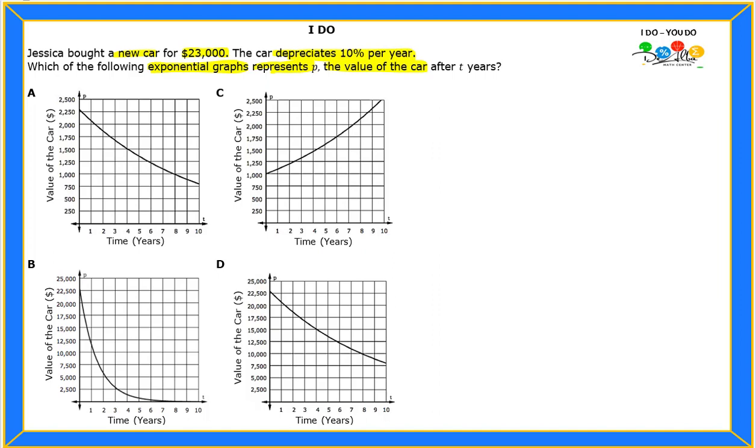First, do we know what depreciate means? Depreciate means something that goes down. The price of the car will start going down lower and lower every year. Even though Jessica paid $23,000 for the car, if she wants to sell it after five years, she will not be able to sell it for $23,000 because the car depreciated 10% per year.